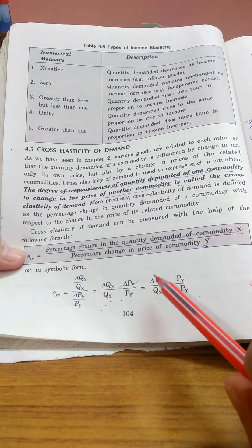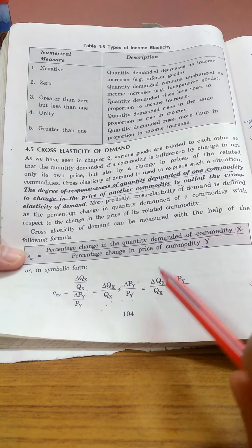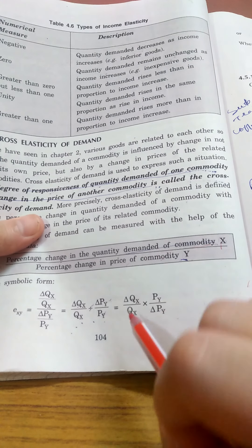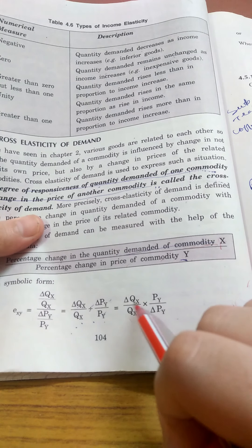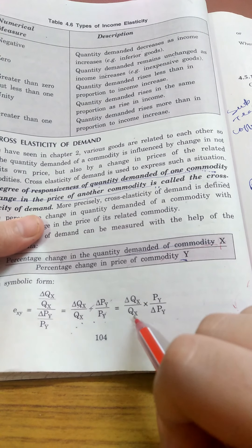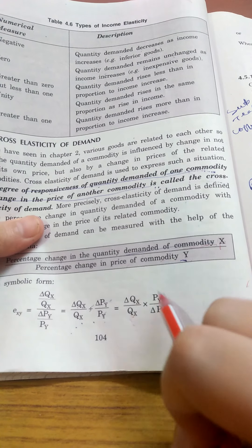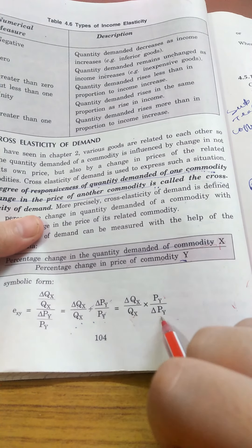Where this stands for change, this means quantity demanded of X. How much change in X's demand upon the original X demand, times price of Y commodity upon the change in price of Y commodity.